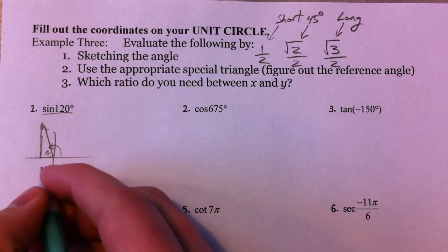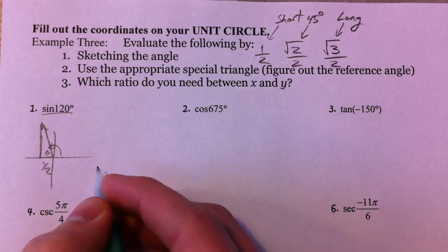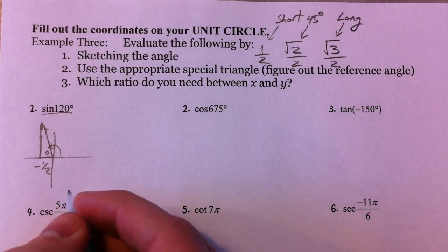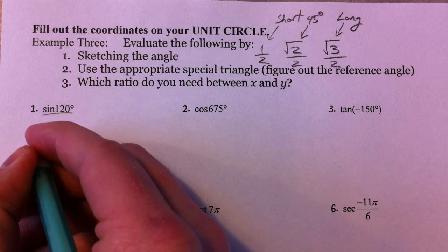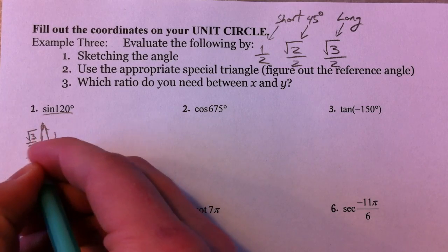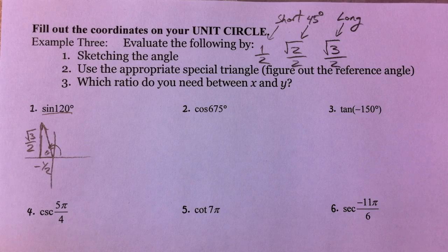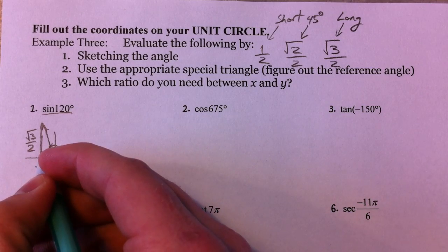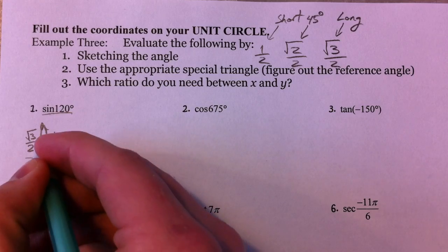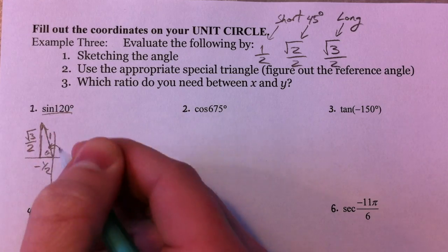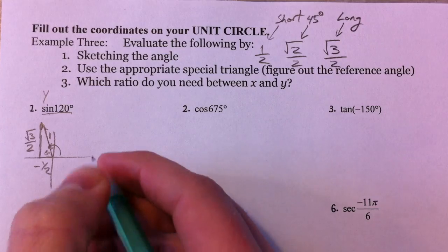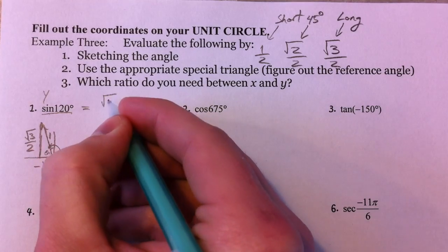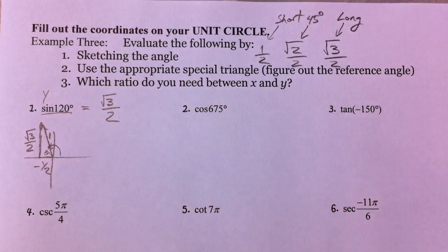The short side is 1/2, and because we've gone to the left it's negative 1/2, because your x is negative. Your y value is the long one, √3/2. That's why I overemphasized that this side is the long side. The sine is the opposite over your radius of 1, so that's the y value. The sine of 120 is √3/2.